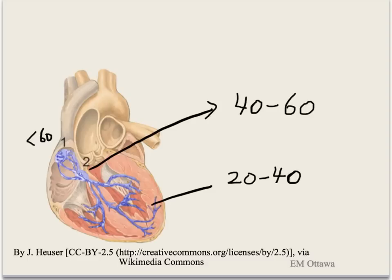In both cases, since there are no atrial depolarization, there will be no P waves. In the case of the AV node taking over, that will create a junctional rhythm and the QRS complex is narrow. If the ventricles take over, the QRS complexes will be wide.